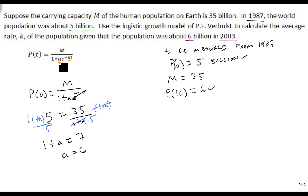Perfect. Now, we know what our A is, so we know this piece, so we don't need to worry about it anymore. So, now we're going to use P of 16 equals 6.